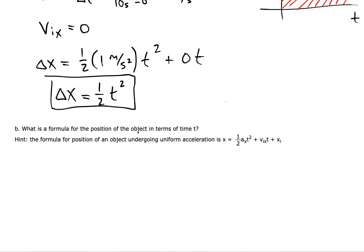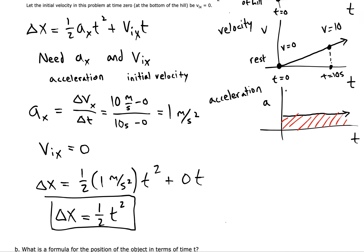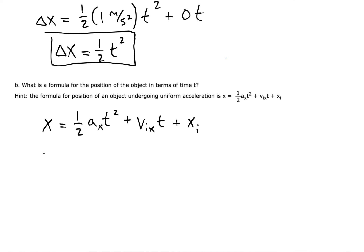What is a formula for the position of the object in terms of time T? Right, so position has a little bit different formula from displacement. In position formulas, we have an initial position term. The x_i is gonna be zero because that's where we started. So you'd have one half one T squared plus zero T plus zero. So X is one half T squared again, yes.